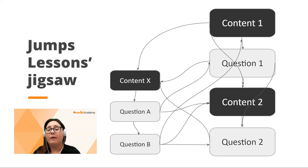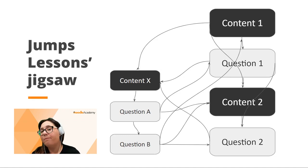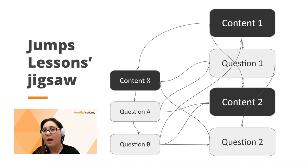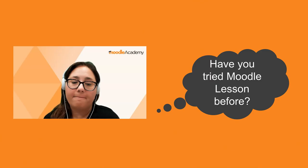The three primary ingredients of branching scenarios are content pages, questions, and jumps. This is a matter of design rather than development, and these three ingredients are not affected by the authoring tools used.